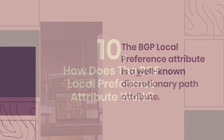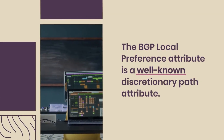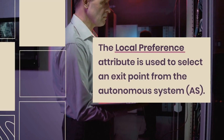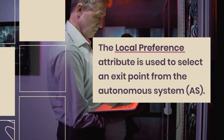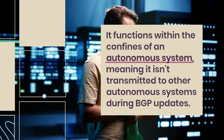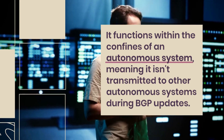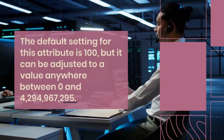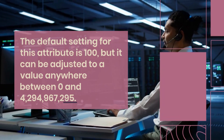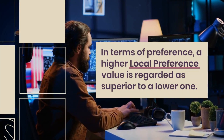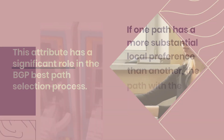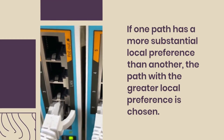How does the BGP Local Preference attribute work? The BGP Local Preference attribute is a well-known discretionary path attribute, recognized by all BGP routers but not necessarily present in every route update. It is used to select an exit point from the autonomous system, and it functions within the confines of an AS — it is not transmitted to other autonomous systems during BGP updates. The default setting is 100, adjustable between 0 and 4,294,967,295. A higher local preference value is considered superior, and it plays a significant role in BGP best path selection.